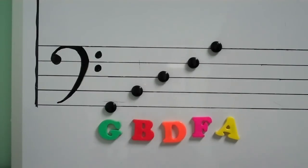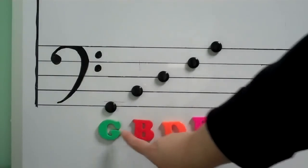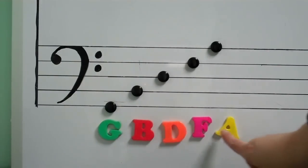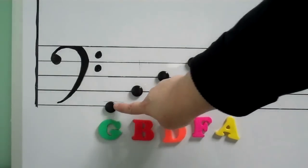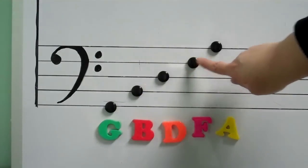For the lines of the bass staff, we can use the phrase Great Big Dogs Fight Animals to help us remember that the line notes are G, B, D, F, A.